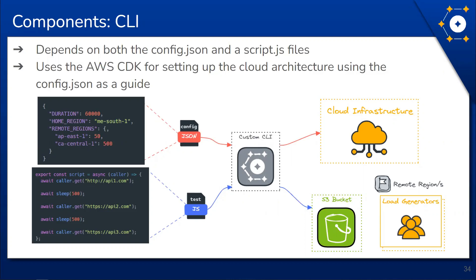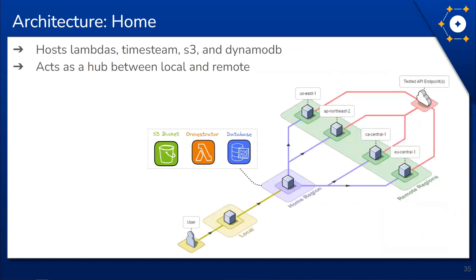Let's draw our attention to the home region, where the first step of the testing process begins. The home region acts as a hub that sits in between the user's local system and the remote regions — containing orchestration and data storage, using the configuration file to initialize the remote architecture, and receiving the test script to be sent to the remote regions. Finally, it returns any testing data from the remote regions to a TimeStream database in the home region.